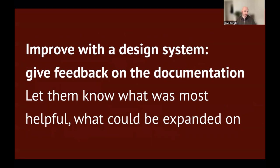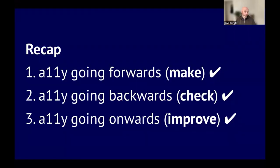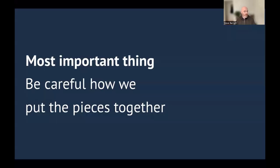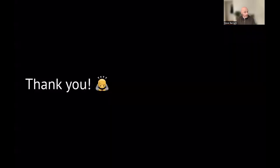We can also give feedback on the documentation — letting the team know what was most helpful is really great, and there might be bits where it wasn't quite clear or where more detail would have been useful. That's also good information for the design system team to have. Recap: we talked about three things — accessibility going forwards, the make part; accessibility going backwards, the check part; and accessibility going onwards, the improve part. The most important takeaway is that we need to be a little bit careful about how we put the pieces together. Thanks for listening.